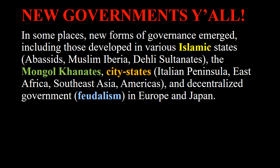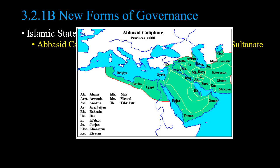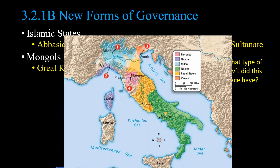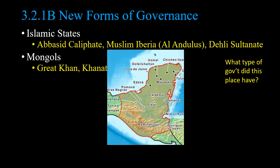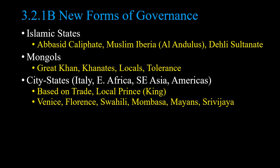Let's look at these new forms of governance. You have the caliphates, and the Mongols — the great Khans and Khanates — who leave local leaders in charge in many places and have a lot of tolerance unless you go against them. You also see city-states: East African, Italian, Southeast Asian, and American, usually led by a local king, prince, or chief. Examples include Venice, Florence, Swahili coast cities like Mombasa, Mayan city-states, and Srivijaya. Japan and Europe have very similar feudal systems with very similar hierarchical levels.